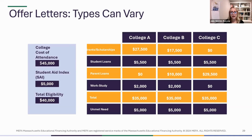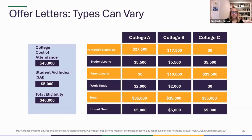Be aware of parent loans in award letters. You'd want to remove them when comparing colleges to see what you'll really owe and assess the true affordability of each. When you have the bill, you'll know you might need to take a parent loan, but that's your decision and shouldn't be part of the award — we still see it happen, so we want to warn you about it.